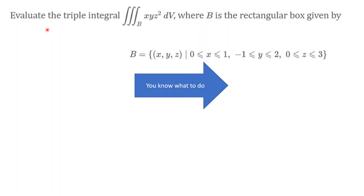Let's dive right in. Evaluate the triple integral over a box where x is between 0 and 1, y is between minus 1 and 2, and z is between 0 and 3. You're integrating x y z squared dV over that box. You know what to do.